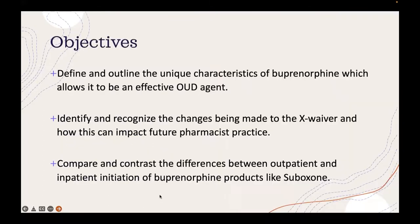Here are my objectives. I would like to define and outline the characteristics of buprenorphine, which allows it to be an effective OUD, opioid use disorder agent. Identify and recognize the changes being made to the X waiver and how this can impact future pharmacist practice. And then compare and contrast the differences between outpatient and inpatient initiation of buprenorphine products like Suboxone.